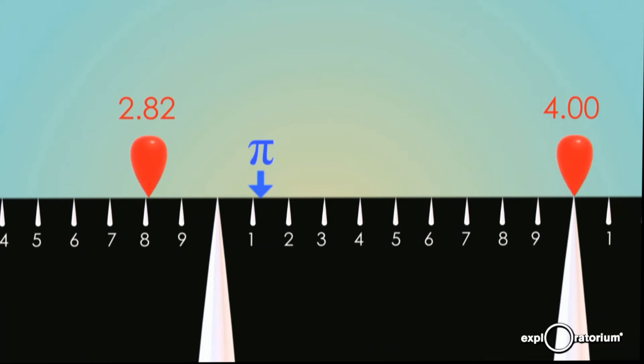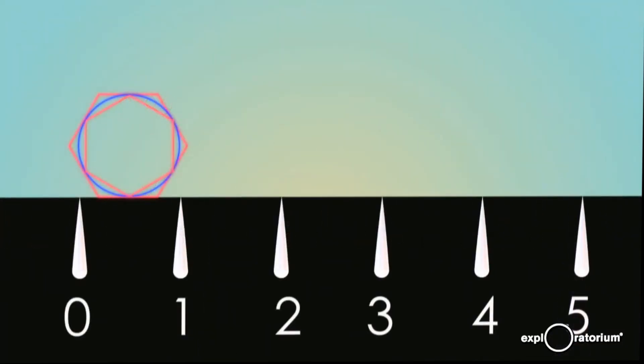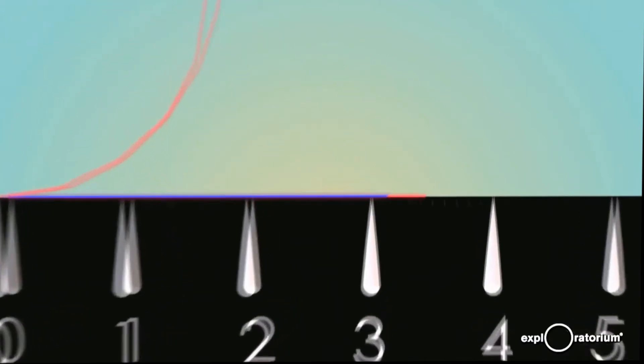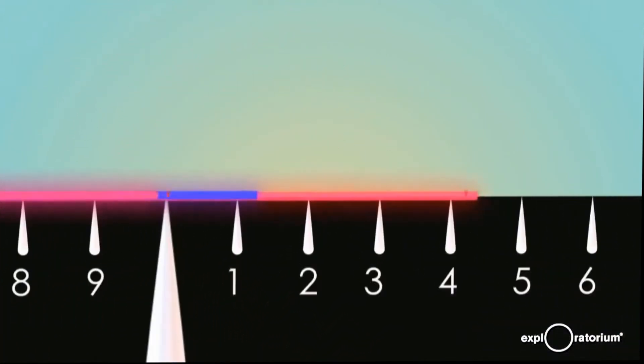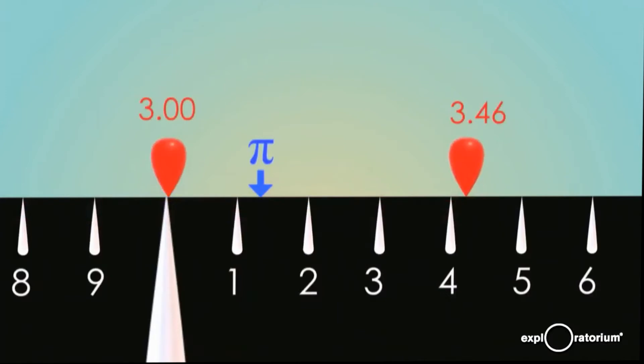The second observation is that if instead of using a four-sided polygon, a square, we used a polygon with more sides, like six, we can see that the inner and outer polygons actually hug the curve of the circle a little more tightly. So if we unroll these, we're actually going to get a tighter upper and lower bound for pi. If we calculate that, we see that with a six-sided polygon, we calculate that pi is somewhere between 3 and 3.46. So the second observation is that if you use more sides on your polygon, you can get a more accurate approximation for pi.